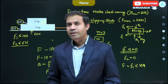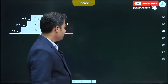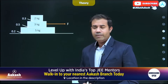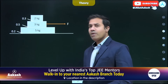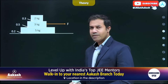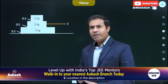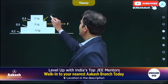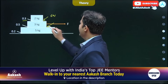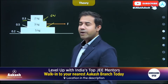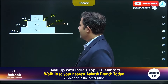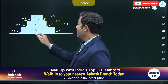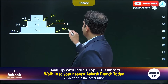Let us see another problem with three blocks. We have a 2 kg block, 3 kg block, and 5 kg block. Before writing equations, let us calculate the limiting frictions. At the 2 kg–3 kg contact: mu = 0.3, normal = 20 N, so limiting friction = 6 Newtons. At the 3 kg–5 kg contact: mu = 0.5, normal = 50 N, so limiting friction = 25 Newtons. At the ground: normal = 100 N, mu = 0.2, so limiting friction = 20 Newtons.